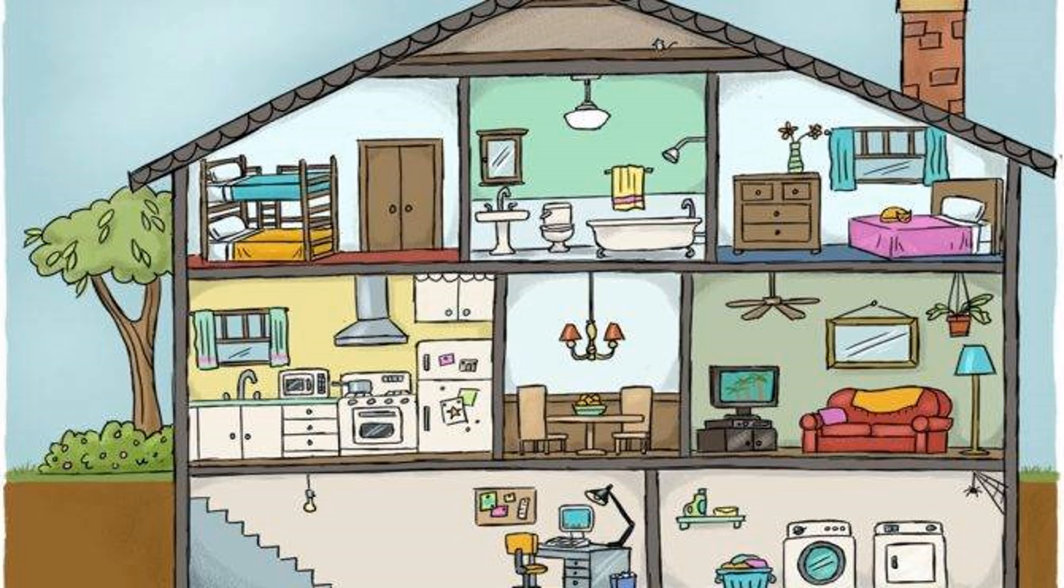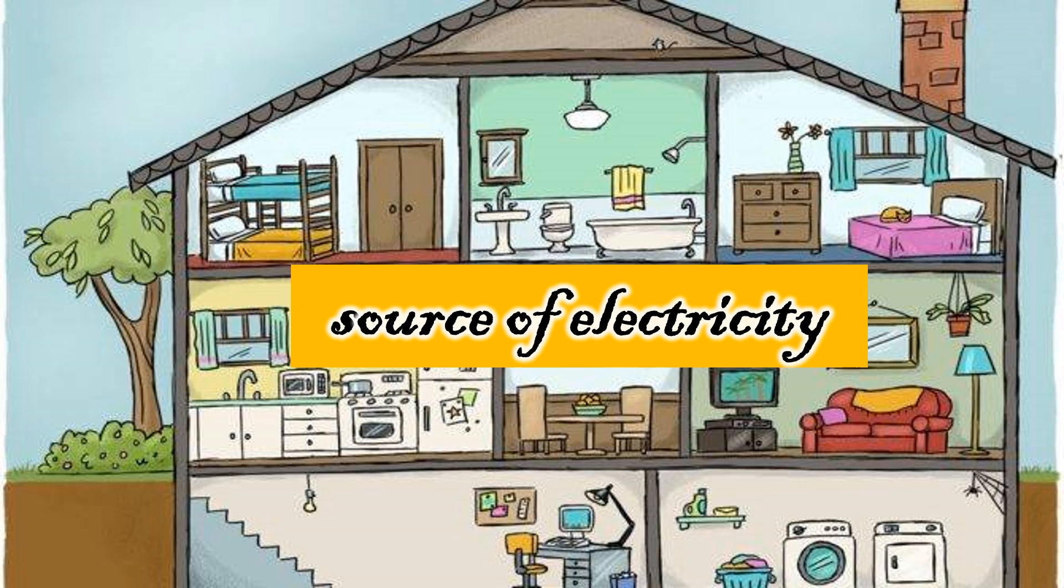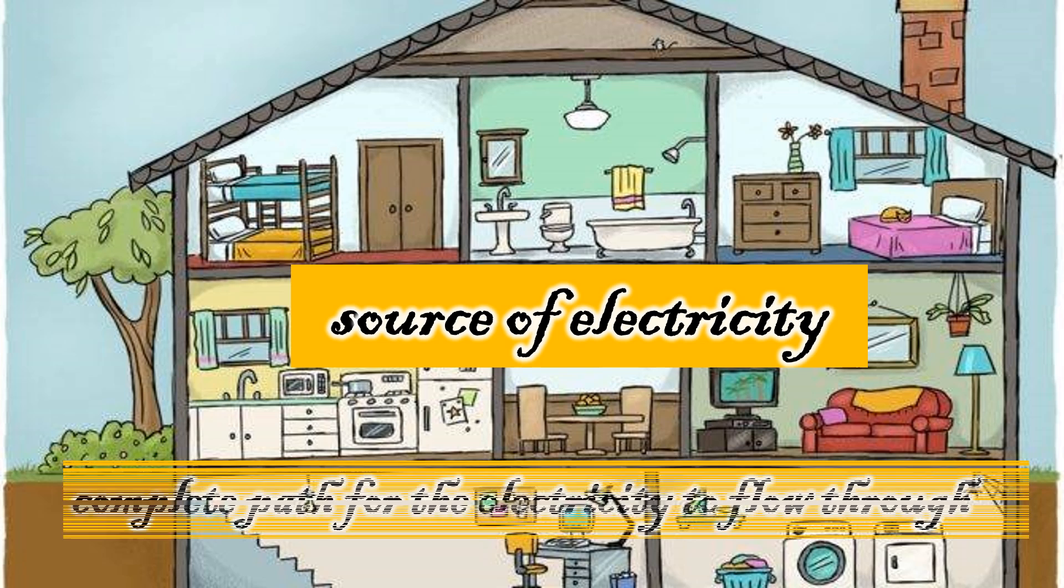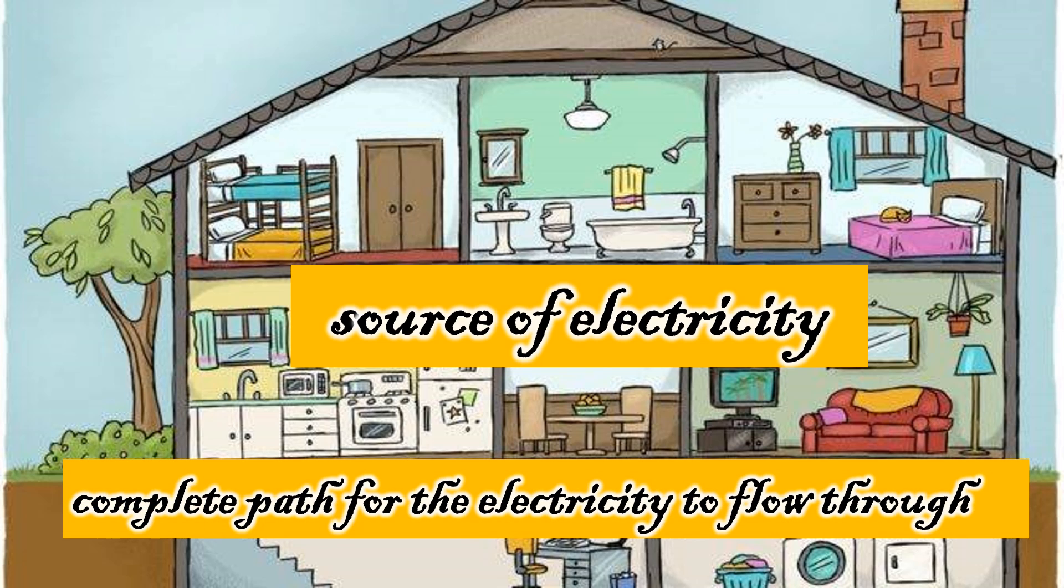Two conditions must be met in order for electricity to flow. First, there must be a source of electricity. Second, there must be a complete path for the electricity to flow through.